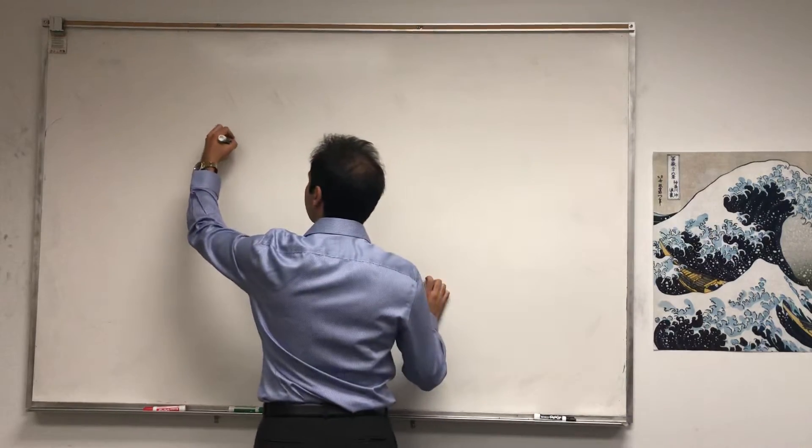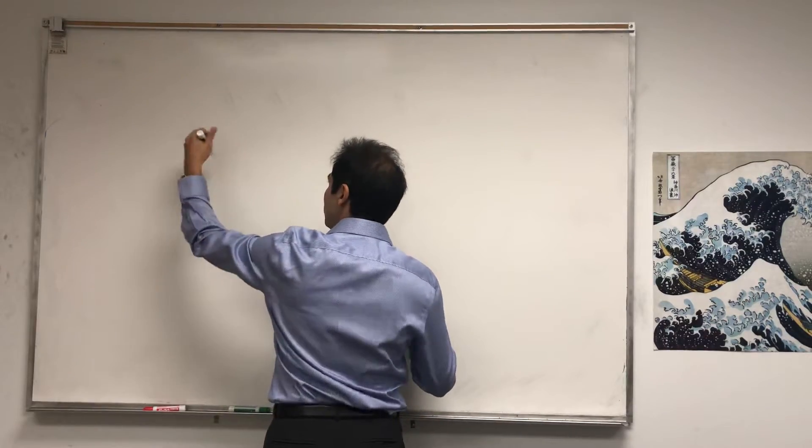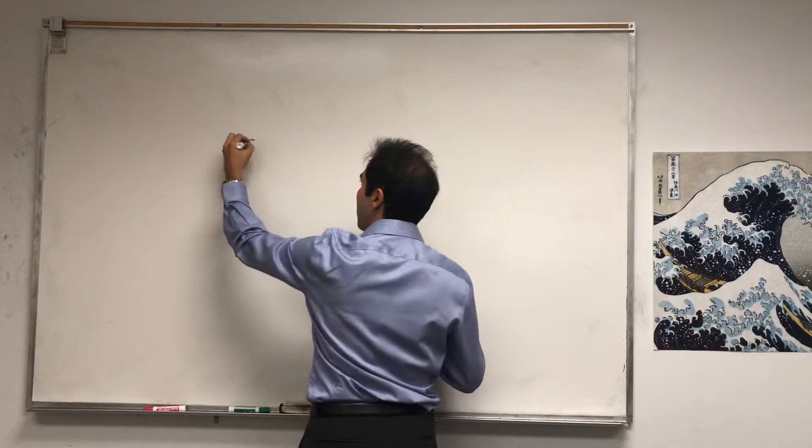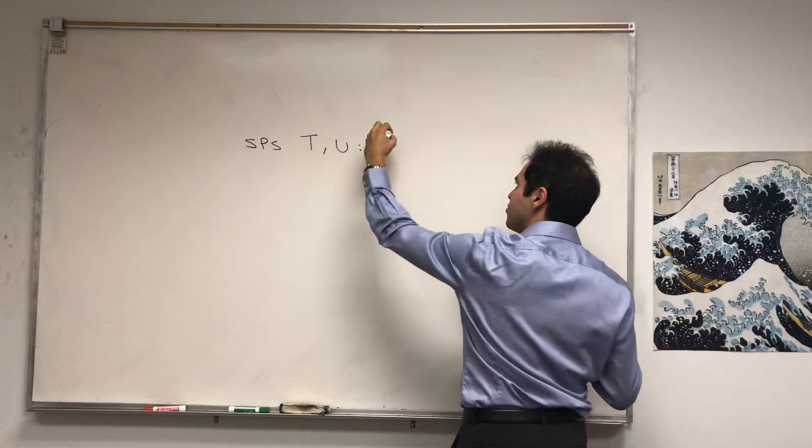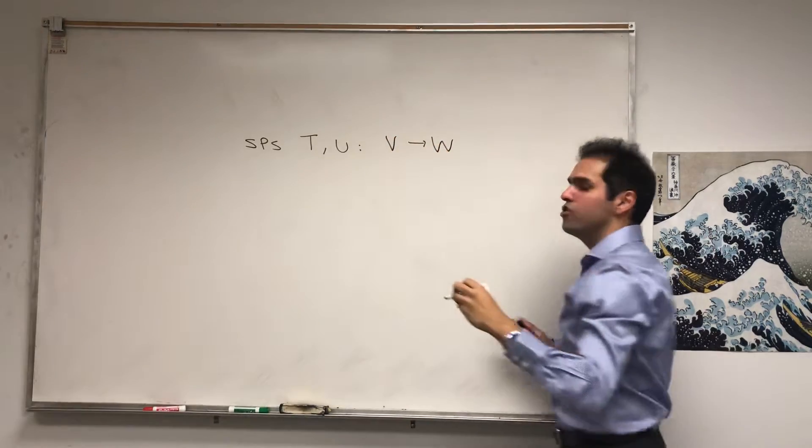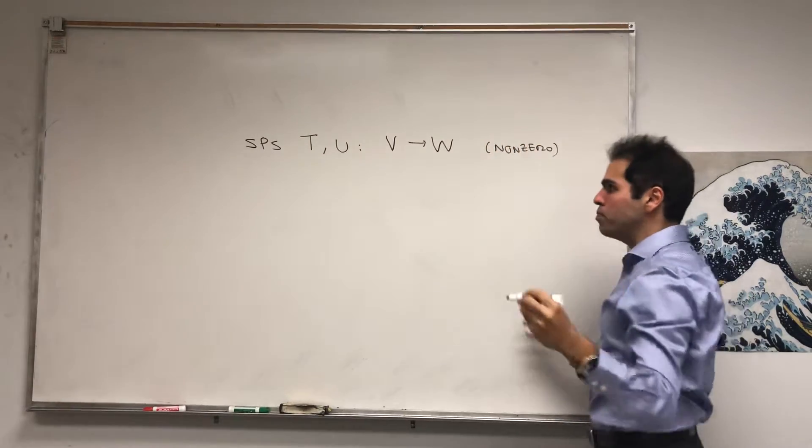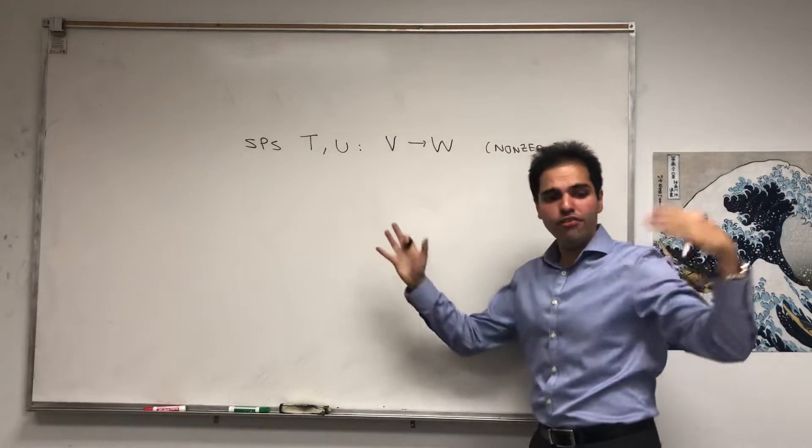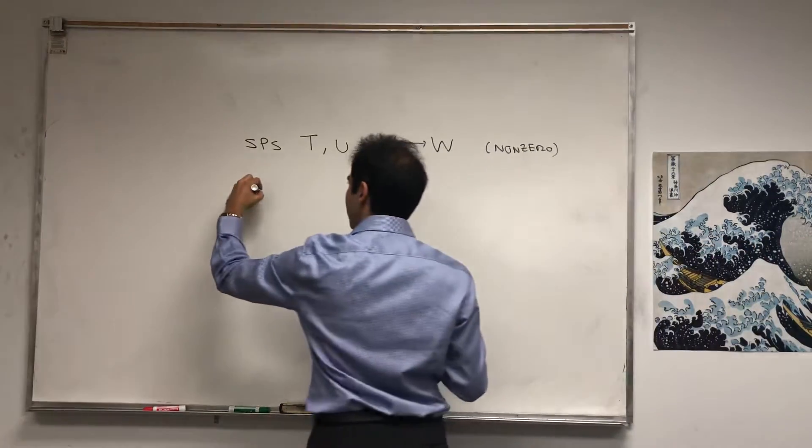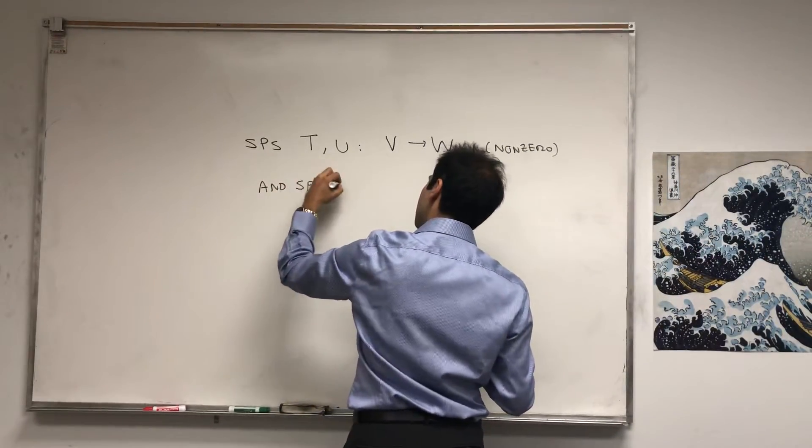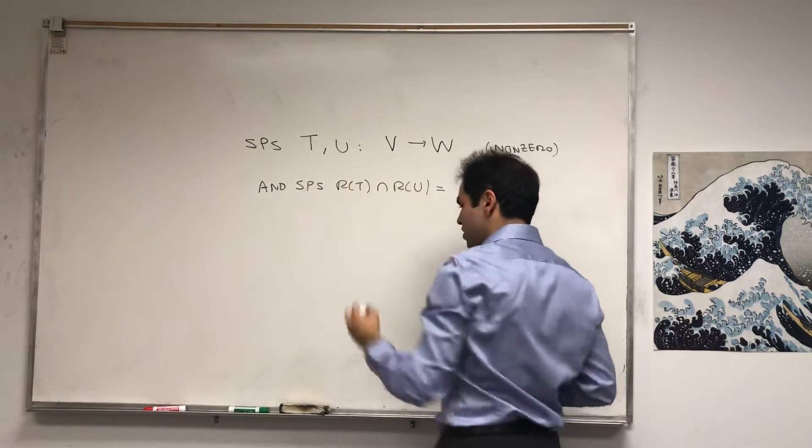Suppose V and W are vector spaces and T and U are linear transformations from V to W, and they're both nonzero. Suppose that if you take the range of T and the range of U, they're basically disjoint.